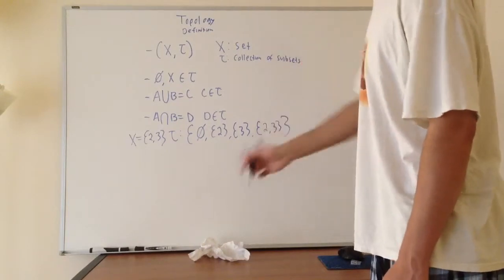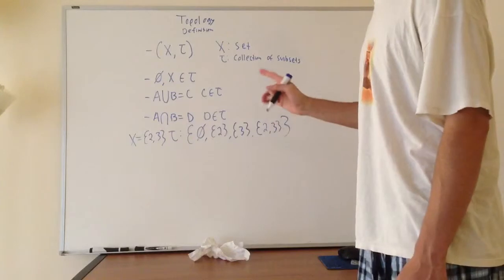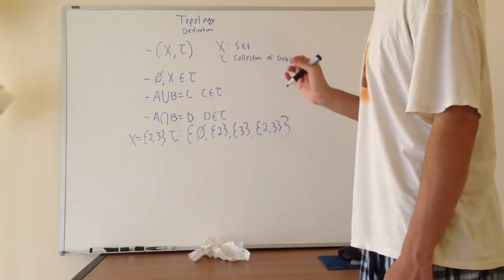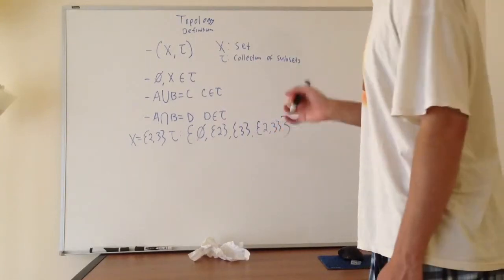That's an important property. And also, it's closed under finite intersections. It's an important note. Because there are some cases where if you take an infinite intersection, the result, we will not be dealing with a topological space.